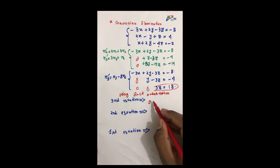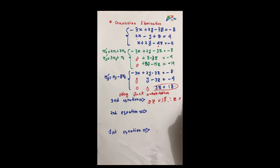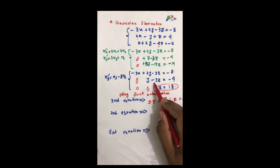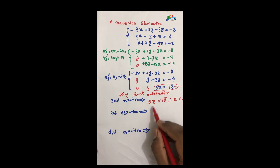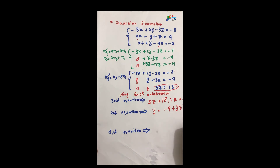9z equals 18, so z equals 18 divided by 9, which equals 2. For the second equation: y minus 3z equals minus 4, so y equals minus 4 plus 3z, which is minus 4 plus 3 into 2, giving minus 4 plus 6, equal to plus 2.